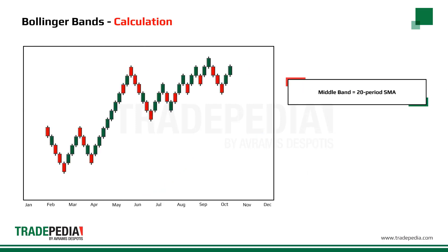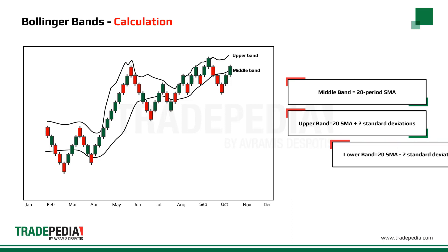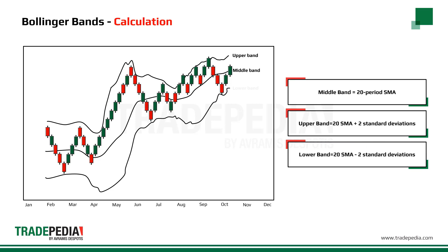The middle band is the 20-period simple moving average. The upper band is plotted two standard deviations above the 20-period simple moving average. The lower band is plotted two standard deviations below the 20-period simple moving average.